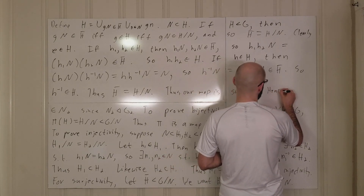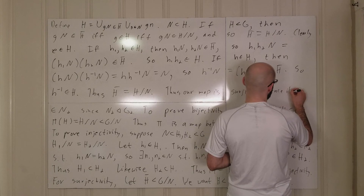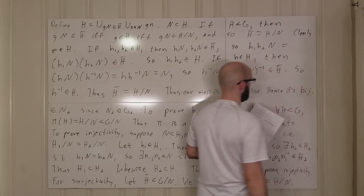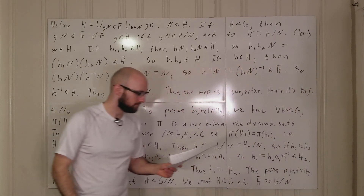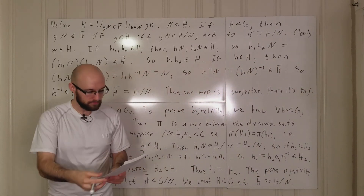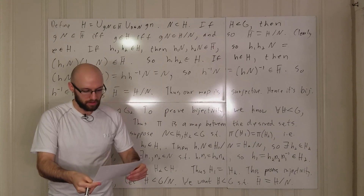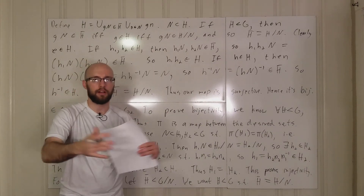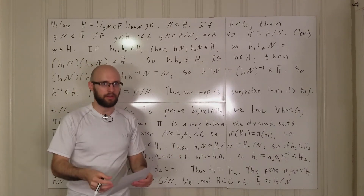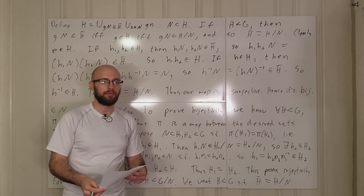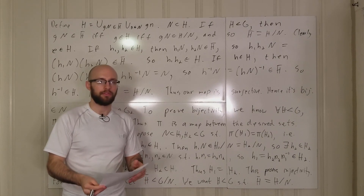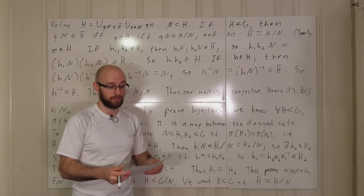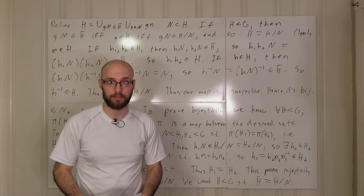Hence the map is bijective. All we need to do now is prove the normality statement and the final isomorphism part of the claim, and we are going to do those in the next video.